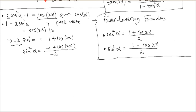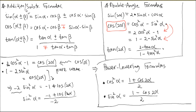We're not going to consider tangent — just sine and cosine, because periodic wave analysis is done in terms of sine and cosine. That's sufficient. So that's another set of formulas you have to know — the power-lowering formula. Addition formula goes to double-angle formula, and then the cosine 2α double-angle formula leads to the power-lowering formula.